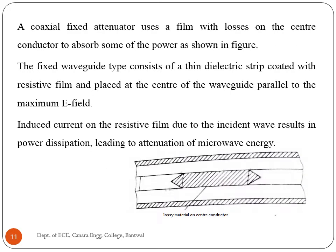A coaxial fixed attenuator uses a film with losses on the center conductor to absorb some of the power. The fixed waveguide type consists of a thin dielectric strip coated with resistive film placed at the center of the waveguide parallel to the maximum E field. Induced current on the resistive film due to the incident wave results in power dissipation, leading to attenuation of microwave energy. The dielectric strip is tapered at both ends up to a length of more than half wavelength to reduce reflections. The resistive vane is supported by two dielectric rods separated by an odd multiple of quarter wavelength and perpendicular to the electric field.